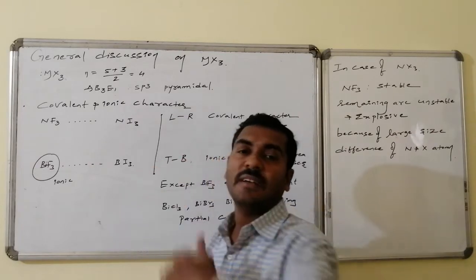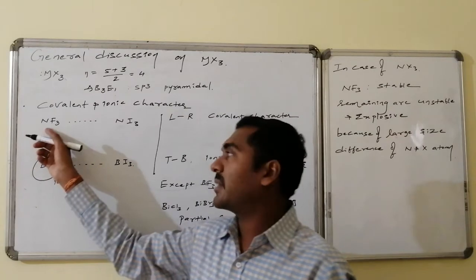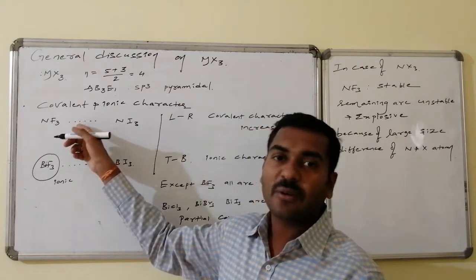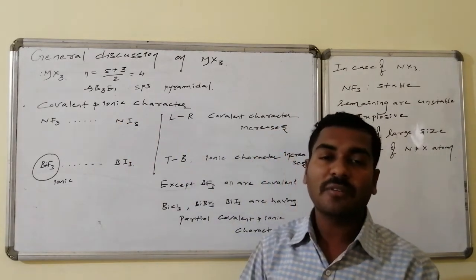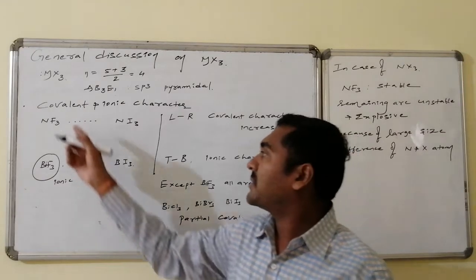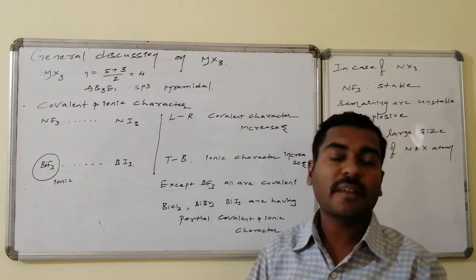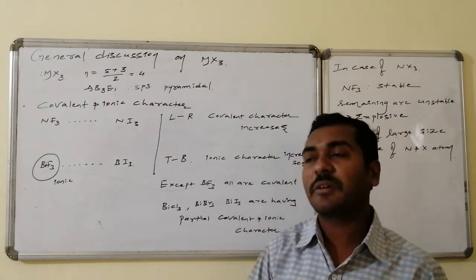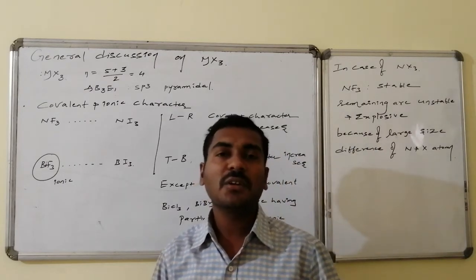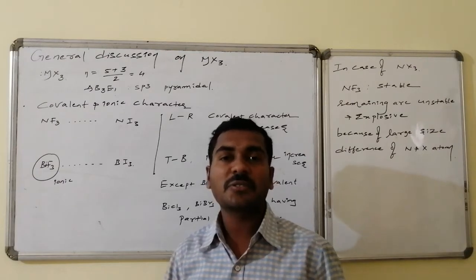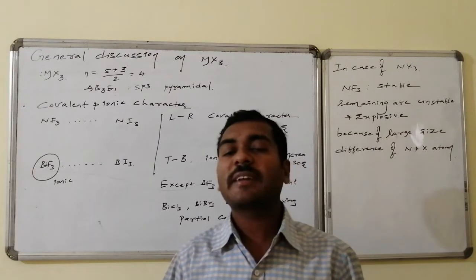As the size of the anion increases, the polarization power of the cation and the polarizability of the anion both enhance. As a result, the withdrawal of electron density from the anion is possible, which is the sign of covalent character. So from left to right, covalent character increases: trichloride is more covalent than trifluoride, tribromide is more covalent than trichloride, and triiodide is more covalent than tribromide. From top to bottom in any halogen series, metallic character increases, and since metallic nature is ionic in nature, ionic character increases going down the group.